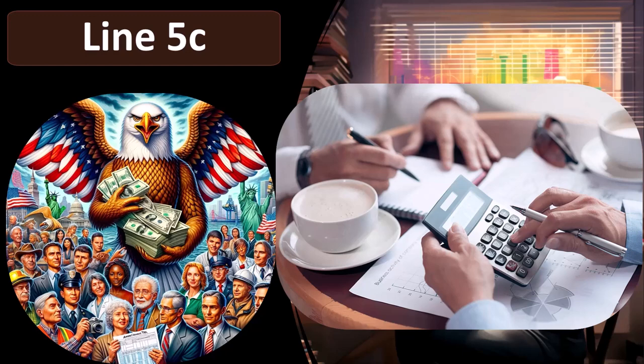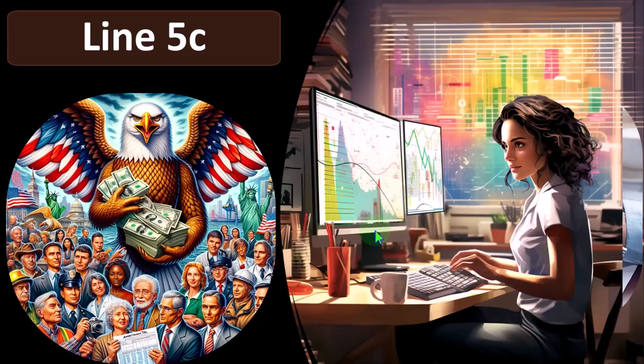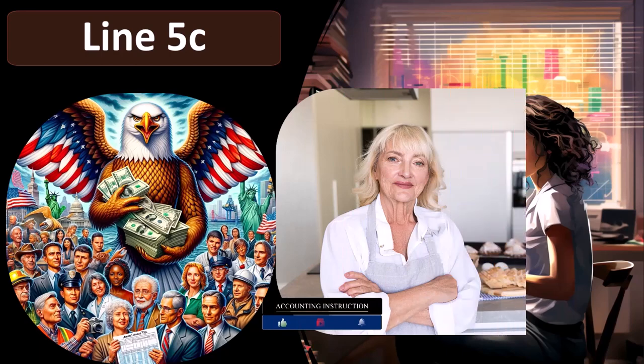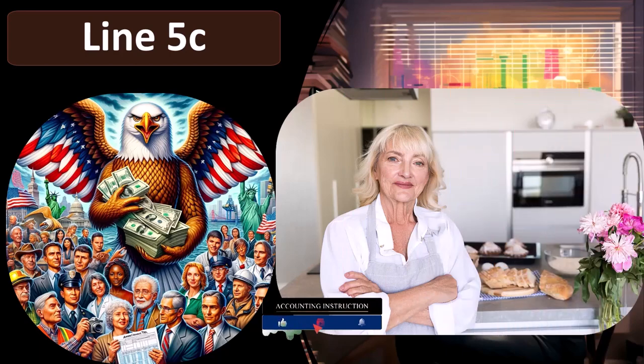Sometimes they include other deductions — and this is much of what Schedule A is — even though they're basically personal in nature, as would be the case for normal taxes for the state and locale. Those are taxes that depend on your personal living choices about where you're going to be. If you paid state and local taxes as part of your business, they might be deductible on a Schedule C as a normal and necessary business expense. But if they're personal, you would think they would not be deductible — but for some reason, some of them are.